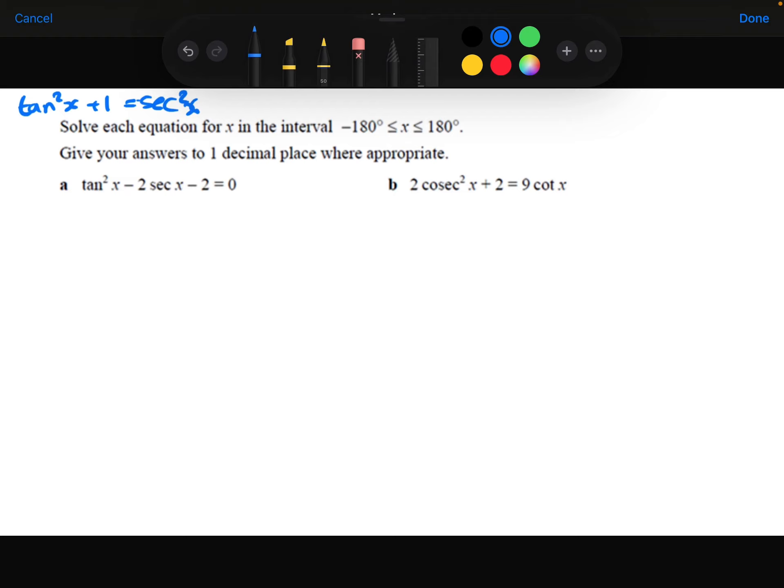I'm going to make tan the subject by subtracting the 1 from both sides. So tan squared theta is the same thing as sec squared theta minus 1. And now I can replace this tan squared with the sec squared minus 1.